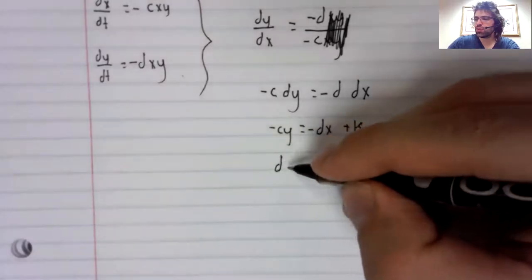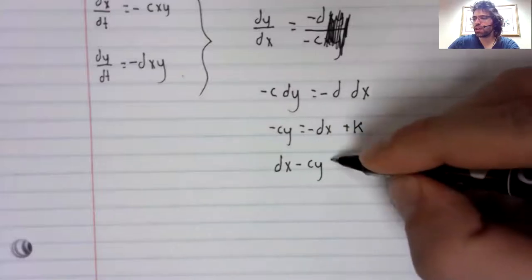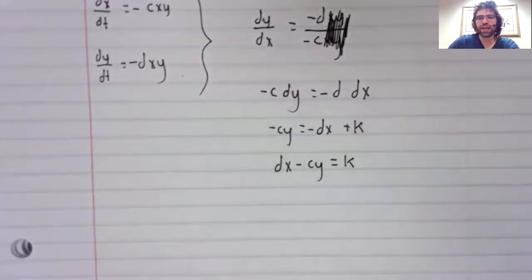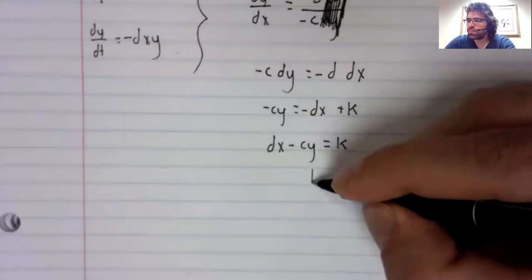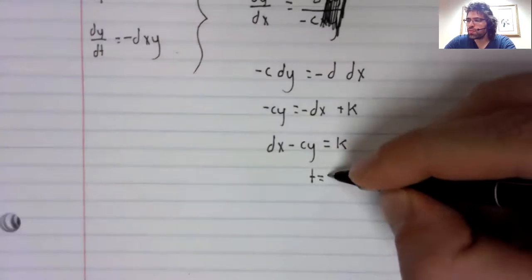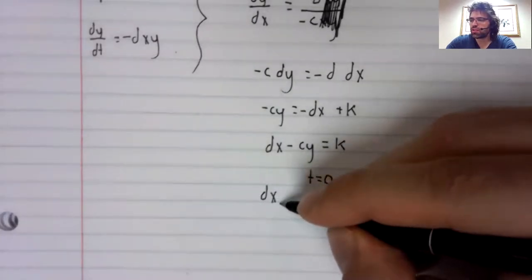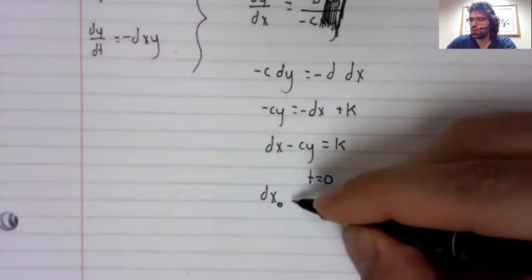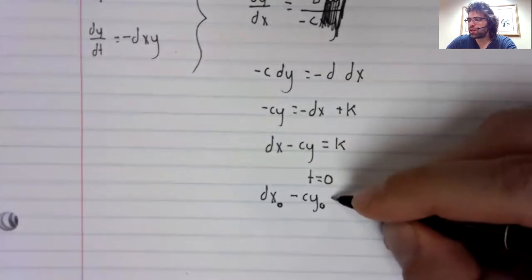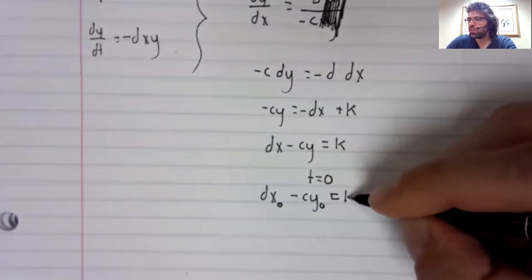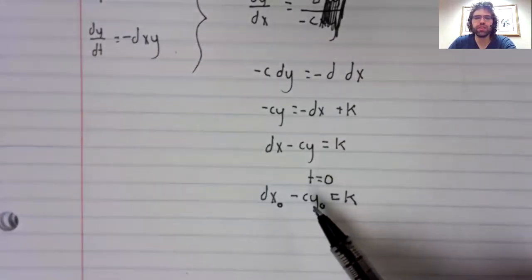So dx minus c y equals k. And as for what k represents, we can let t be zero. If we call x naught x sub zero, and like y is y of zero, then k is this.